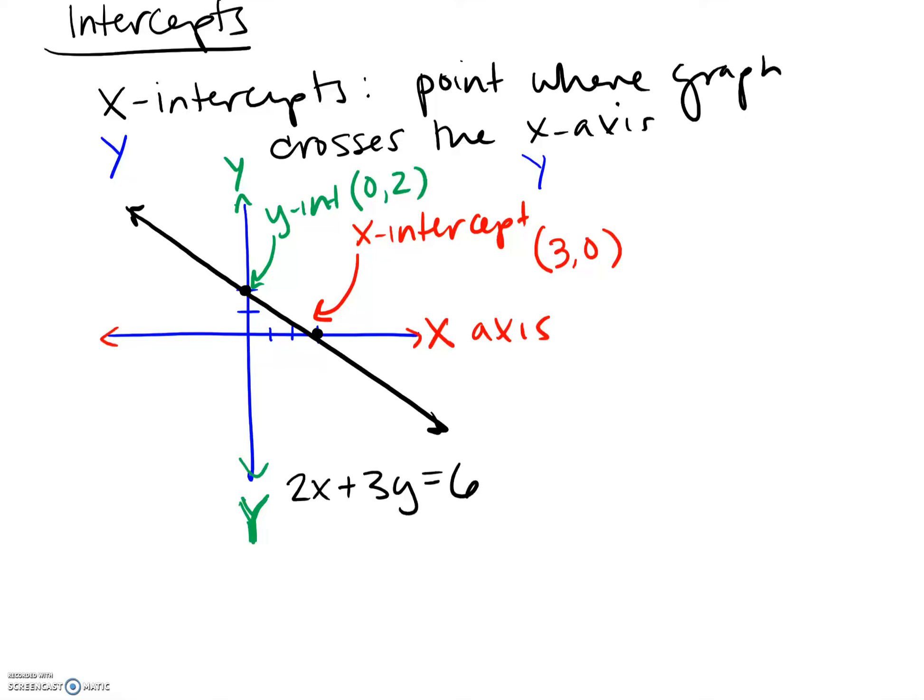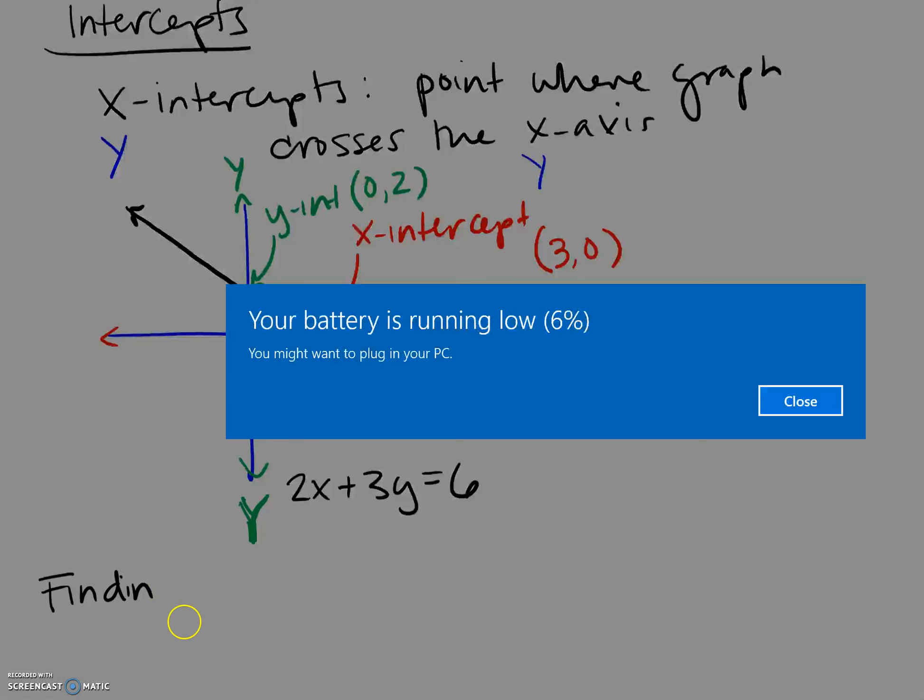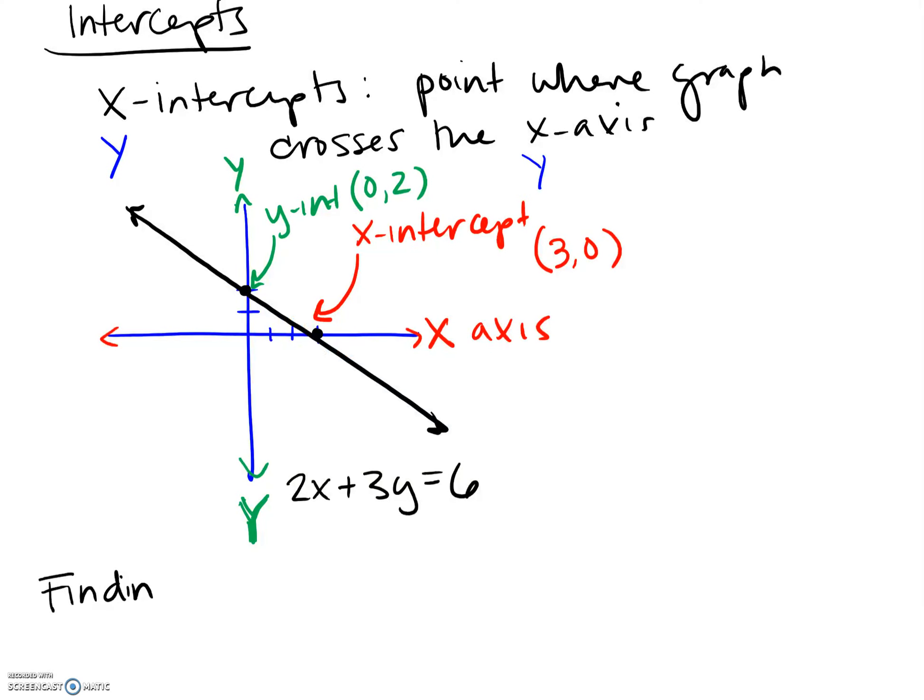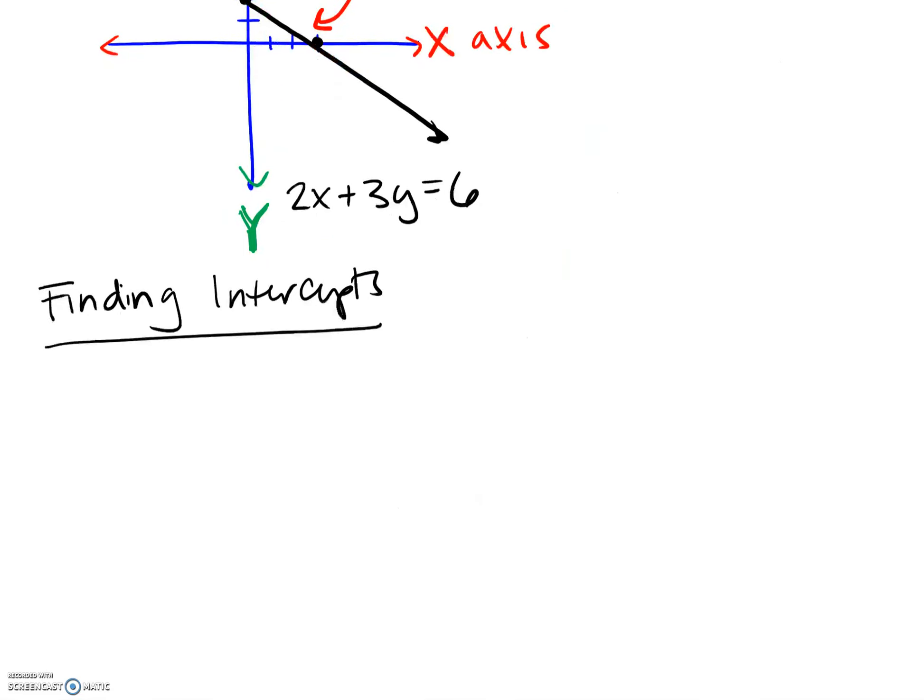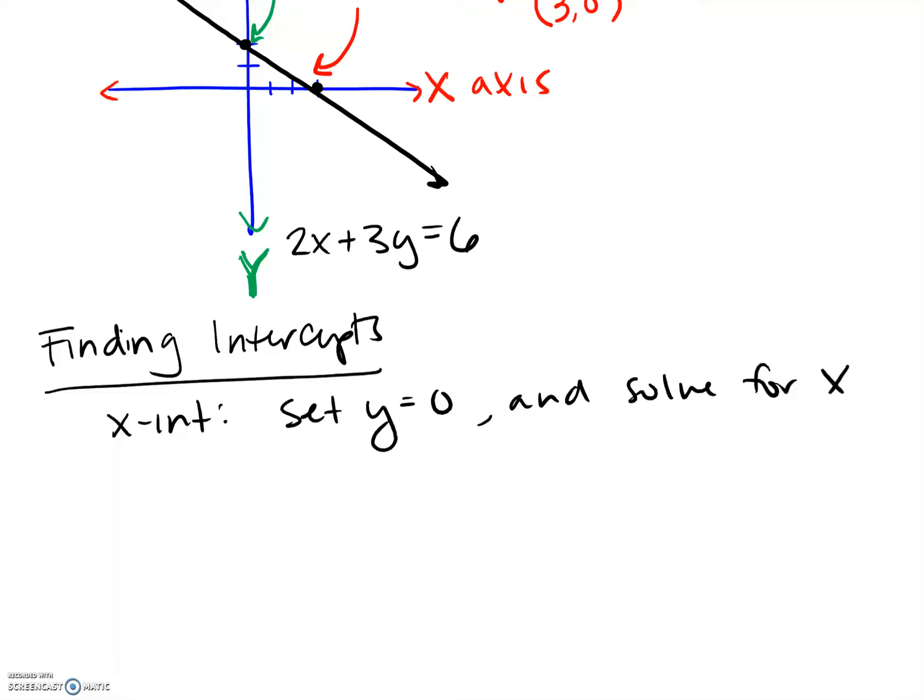So finding them is straightforward. Finding our intercepts. And this is actually true for a lot of graphs and not just linear equations. To find your x-intercept, you're going to set y equal to zero and solve for x.